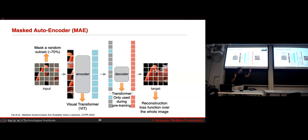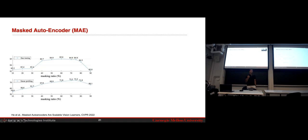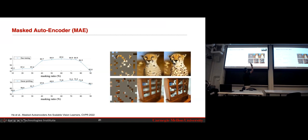As you increase the masking ratio, performance actually gets better. In the paper, even at 90% masking the model reconstructs a lot of the image. After sufficient training, results are quite good — earlier in training it's less accurate, but with more training it performs very well.